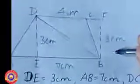Now note that the area of the lower triangle ABD equals half into 7 into 3, that is 21 divided by 2, equal to 10 and a half square centimeters. Similarly, we can find the area of the upper triangle BCD.